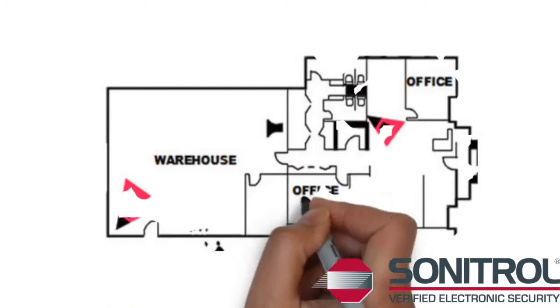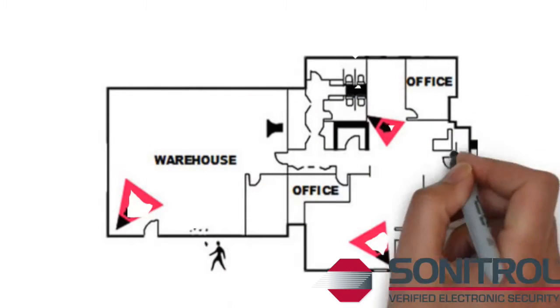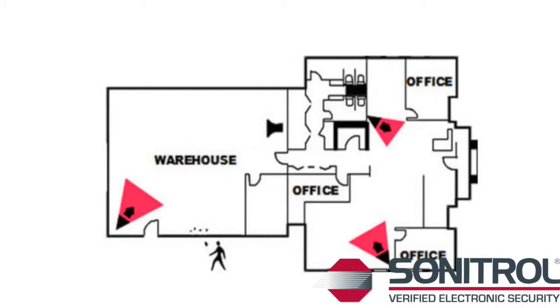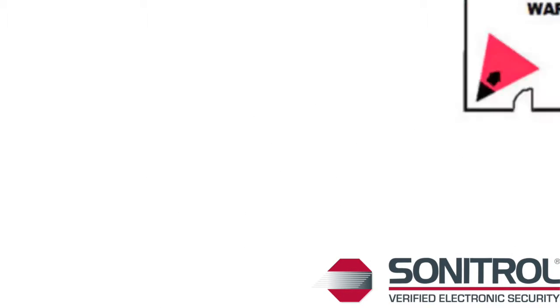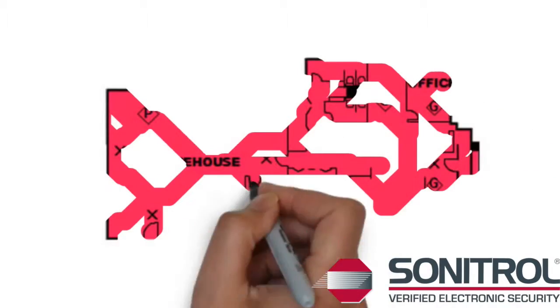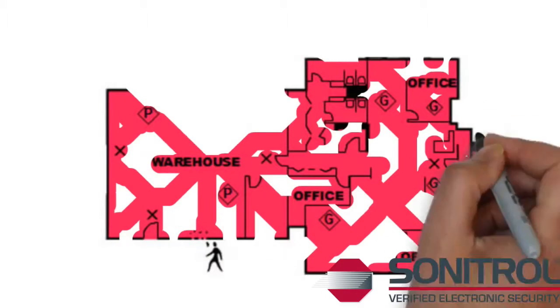Conventional alarms only give you 25% coverage. With Sonitrol's verified alarm, 100% coverage - floor to ceiling, wall-to-wall protection.